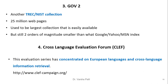The TREC Ad Hoc track offered a large, dynamic dataset with partial relevance judgments, making it a key driver in early IR development. GOV2 is another TREC and NIST collection containing 25 million webpages, and is considered one of the largest easily available collections. The Cross Language Evaluation Forum (CLEF) focuses on European languages and cross-language information retrieval.